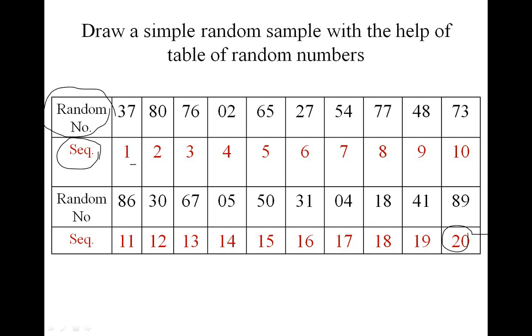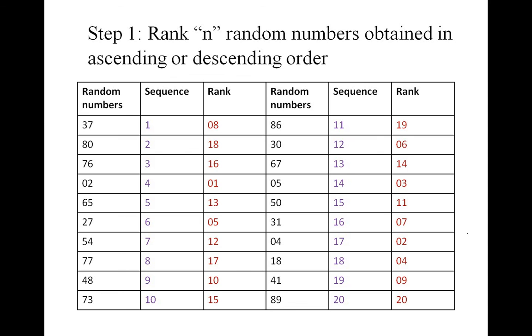We give ranks to the random numbers in ascending to descending order. Here, from 1 to 20, we have given them the ranks.